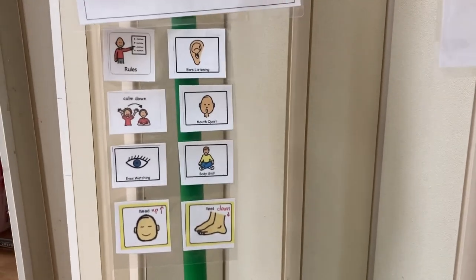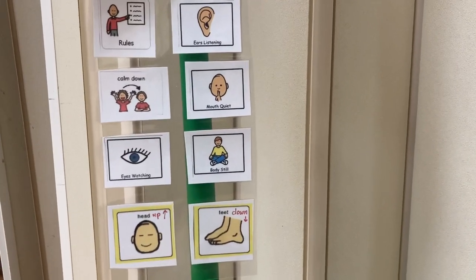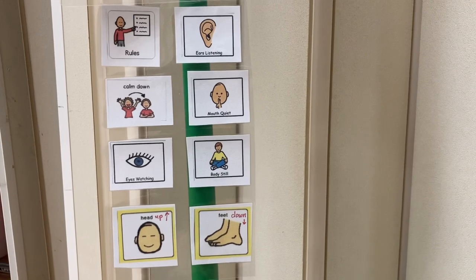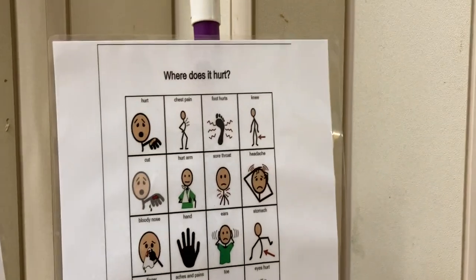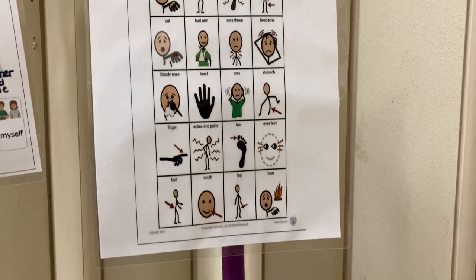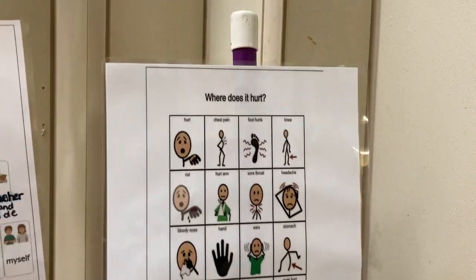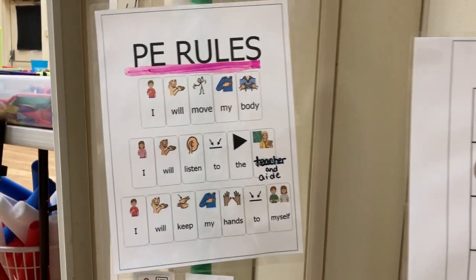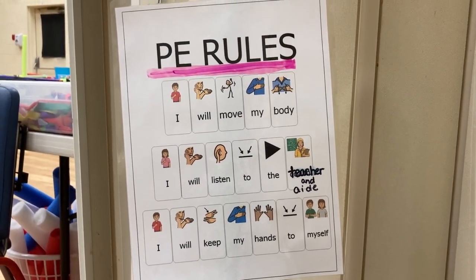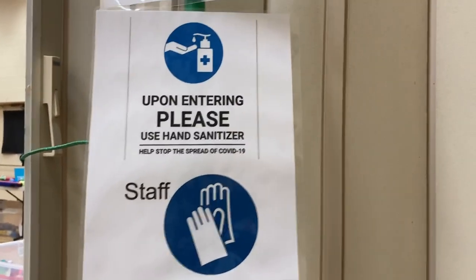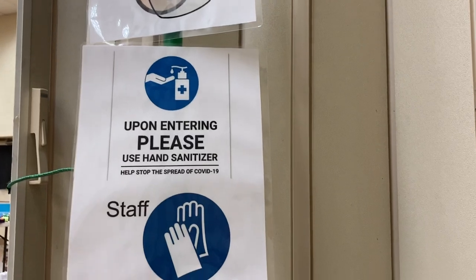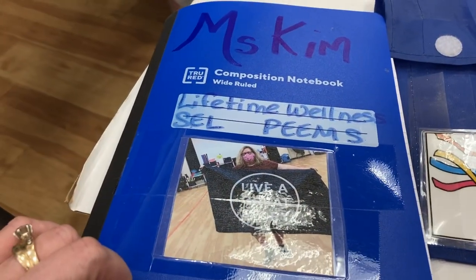Visuals are good because you can have visuals for discipline and rules. You can have visuals that the kids can show you where it hurts. You can have visuals — this was from Bethany Chapel — where you can have your PE rules.